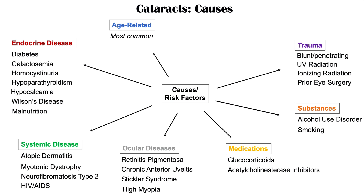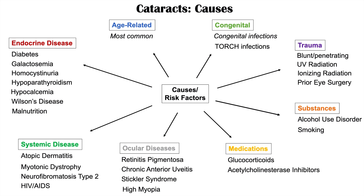Prior eye surgery can also increase the risk for cataract formation. Congenital causes include infections, more specifically the TORCH infections like toxoplasmosis and rubella — any of those infections during pregnancy can increase the risk of the infant having congenital cataracts. As you can see, most of these causes share a common theme: they all involve some form of insult or trauma to the sensitive lens.